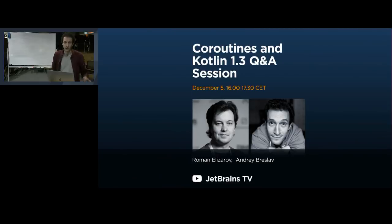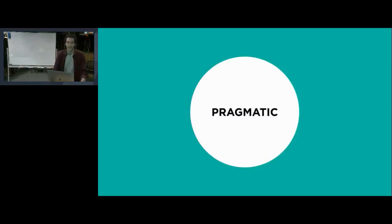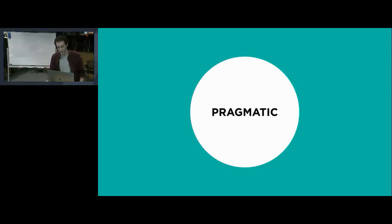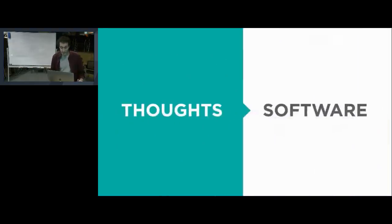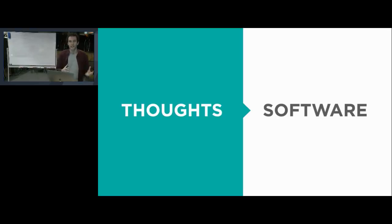You probably know that we released 1.3 not so long ago, and it's been a very interesting release. I'll give an overview of how our core principles are realized in this release and what we pursue. Kotlin is known to be a pragmatic language — this has been our motto since the very beginning. What a language is, as we see it, is a tool for turning human thought into working software.